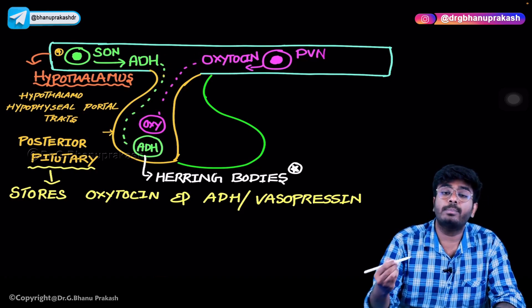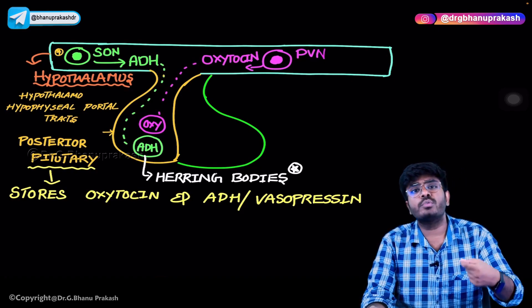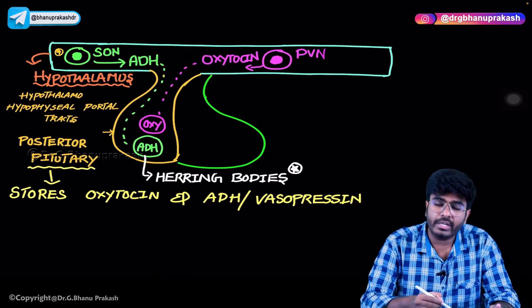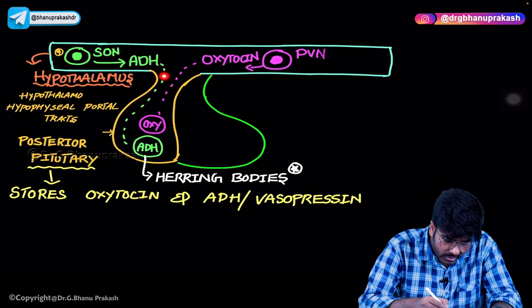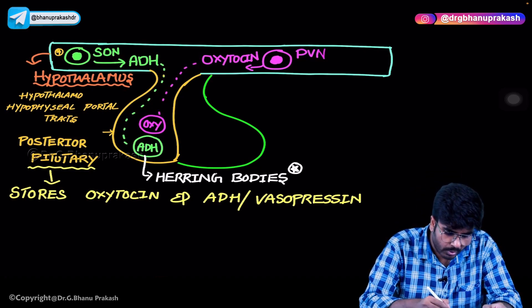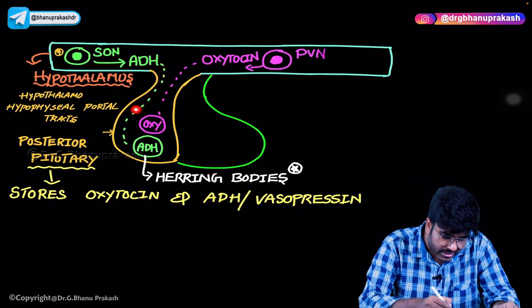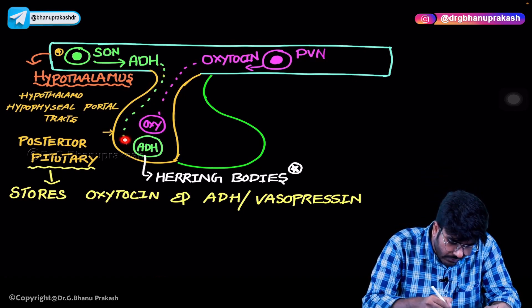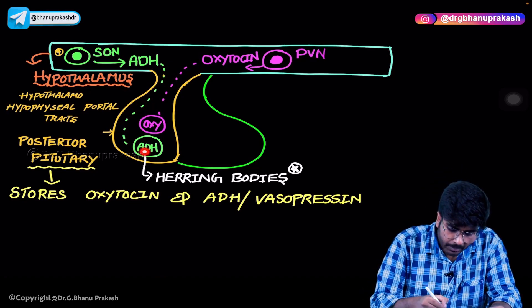Anti-diuretic hormone and oxytocin are produced in the hypothalamus — they are not produced in the posterior pituitary. Most students would answer that oxytocin is produced from the posterior pituitary, but no — oxytocin as well as ADH are produced from the hypothalamus, from the supraoptic nucleus and paraventricular nucleus. These hormones travel down to the posterior pituitary not via blood but via axons — nerve axons coming down from the hypothalamus.